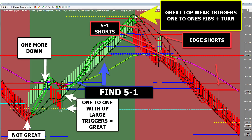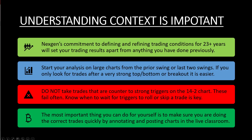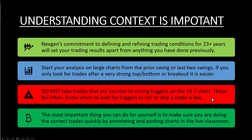You made all kinds of money after a great top to the short side, not worrying too much about Fibonacci supports along the way. To recap: we are very committed to defining and refining these conditions. None of these patterns are new, but you may not have thought of looking at the termination conditions — the tops and bottoms — first before looking for trades. Start your analysis on the large charts first from the prior swing. Gauge whether it's a great look or a weak look, and we'll spend more time with this in class. Don't take trades that are counter to really strong triggers on the 14-2 chart — they fail all the time. Wait for the break or roll when the triggers are really strong.